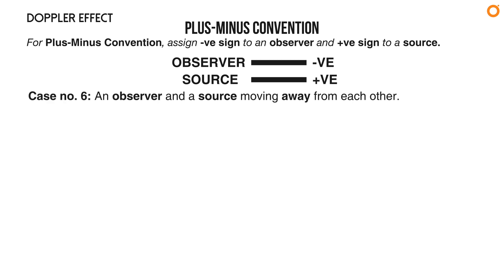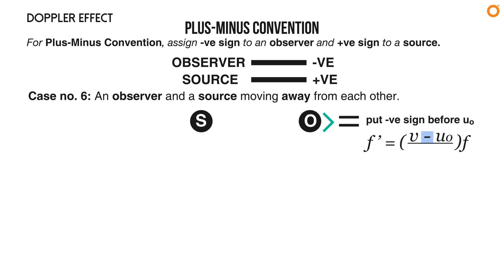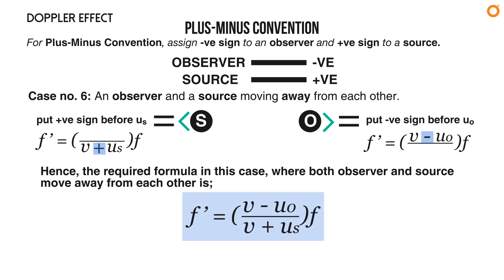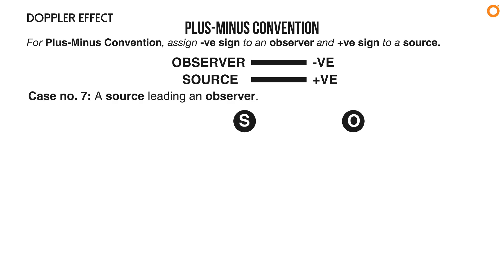Case number six: an observer and a source moving away from each other. Both move in the same direction but away from each other. The observer moves away from the source, so put a negative sign before u₀. The source moves away from the observer, so put a positive sign before uₛ. The required formula is: f prime equals to (v minus u₀) divided by (v plus uₛ) times f.